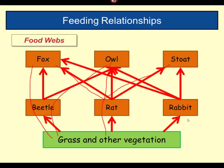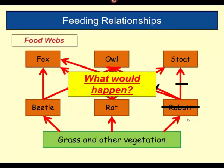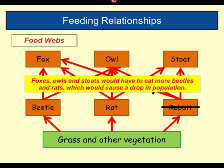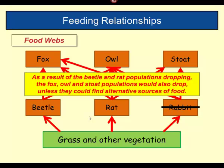We can now think about what happens if something goes wrong within the food web. Suppose all the rabbits die out — what would happen to the other animals? The foxes, owls, and stoats would have to eat more beetles and more rats. So these two populations would go down. As the beetle and rat populations go down, there's less food available for the fox, owl, and stoat. Their populations would also drop unless they could find an alternative source of food. That's the impact of changes to a food web.